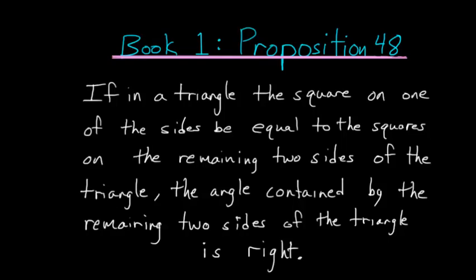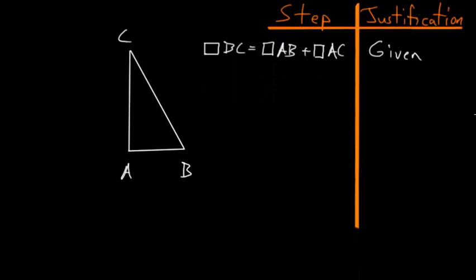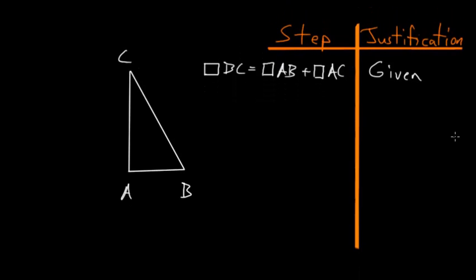For Book 1, Proposition 48 of Euclid's Elements: if in a triangle the square on one of the sides be equal to the squares on the remaining two sides of the triangle, the angle contained by the remaining two sides of the triangle is right. This proposition is essentially the converse of the Pythagorean theorem.